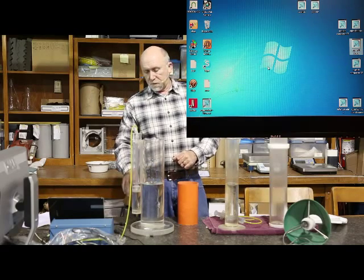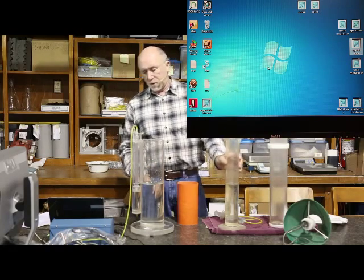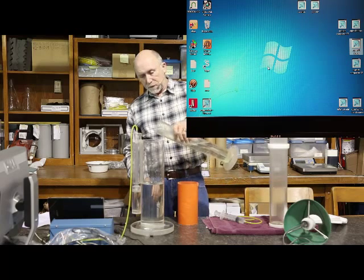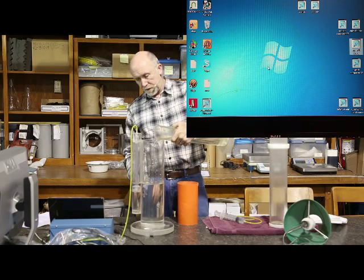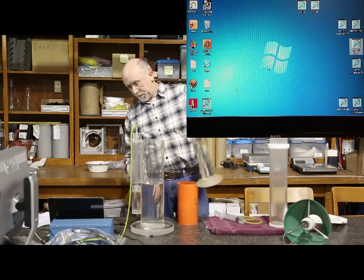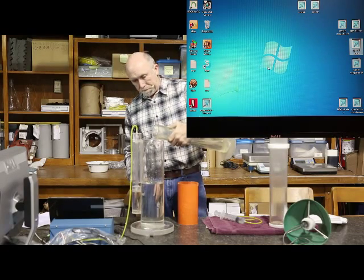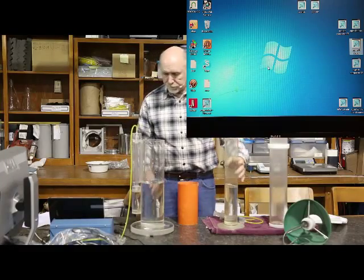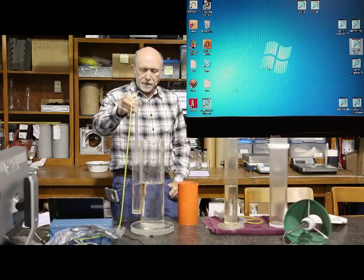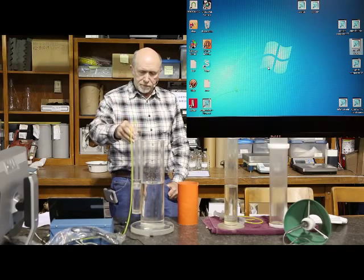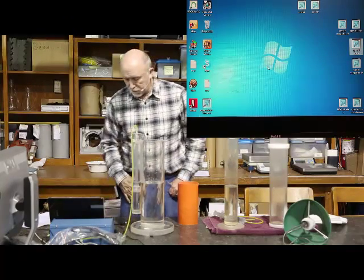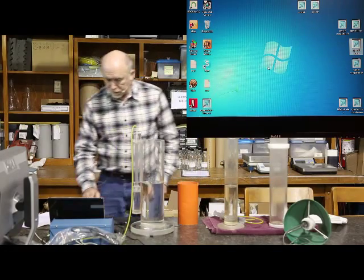Now we're going to adjust the water level. There's a line on this tube and we're going to adjust the water level close to that before we start. Then we're going to lift the sensor tube out of the water and place it back in nice and slowly. That's for measuring displacement.